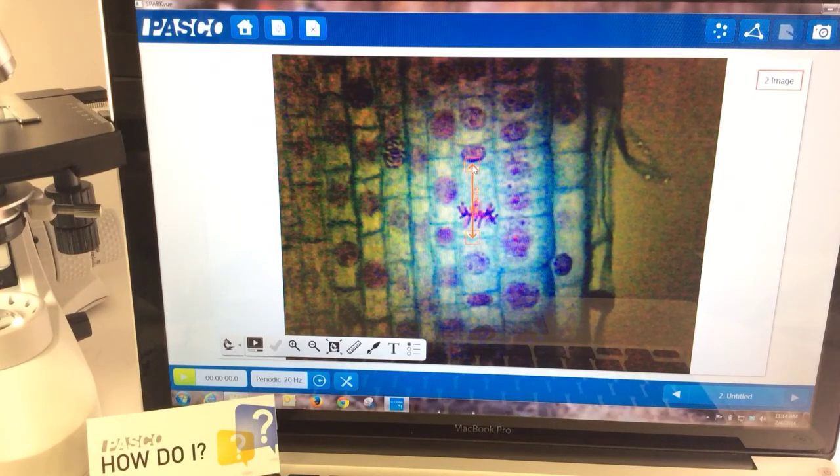And when it goes to that new measurement, it keeps it in the units of micrometers. So this is a cell of 29.84 micrometers in length.